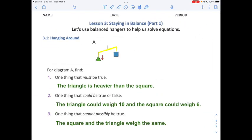I'm going to ask those same three questions about diagram B. But for diagram B, I want you to try to answer the questions. One thing that must be true. One thing that could be true or false. And one thing that cannot possibly be true. And then we'll compare your answers to mine.